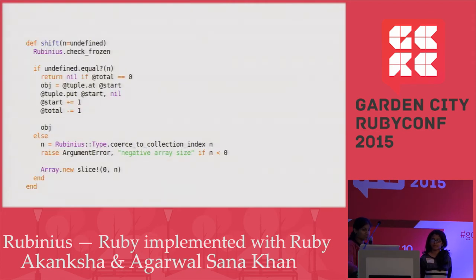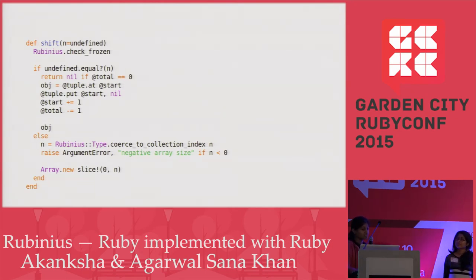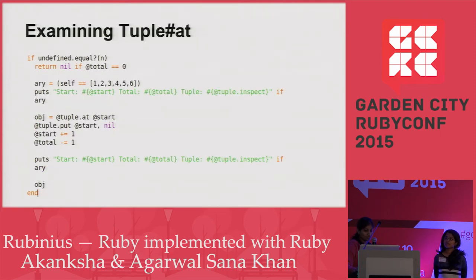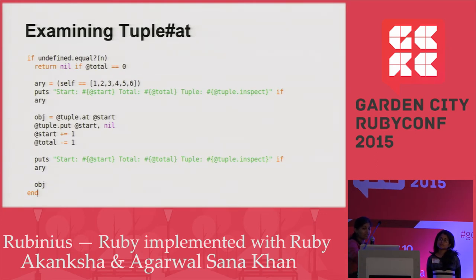This is the implementation of the array shift method. In it you can see the method tuple.at, which is implemented in C++. But since this code is in Ruby, you can go there and put some debugging code to see how the underlying method works. I put in start, total, and inspected the tuple to see what it contains before and after removing the element.